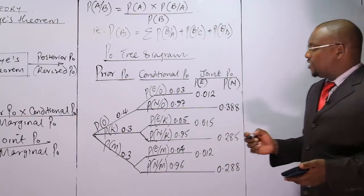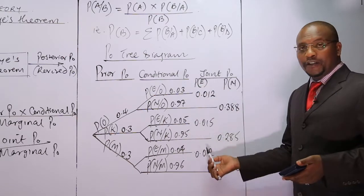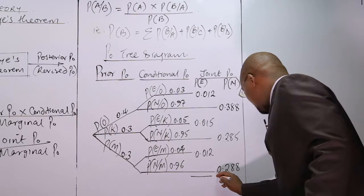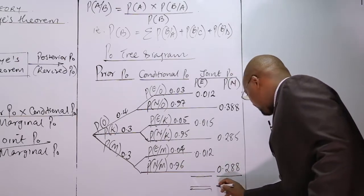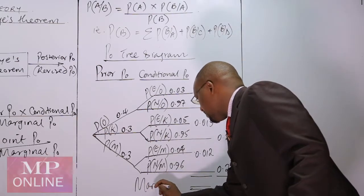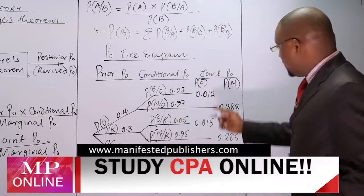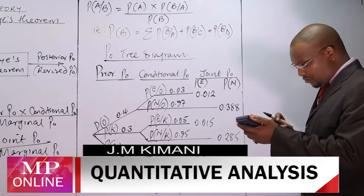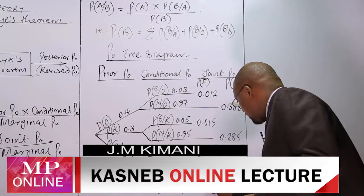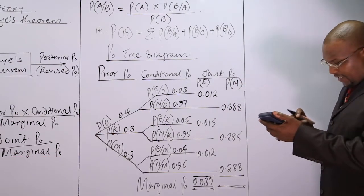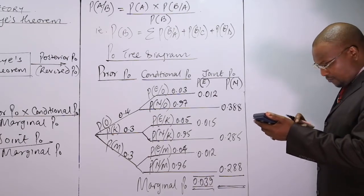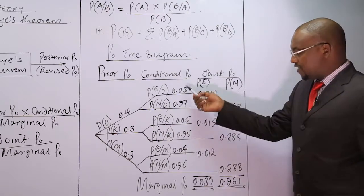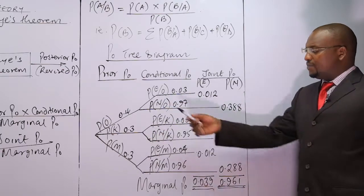Having calculated all joint probabilities, we can now find the marginal probabilities — the total of accounts audited with errors and those with no errors. Adding the error branches: 0.012 + 0.015 + 0.012 = 0.039. Adding the no-error branches: 0.388 + 0.285 + 0.288 = 0.961. Indeed, for every stage the branches should sum to 1, and 0.039 + 0.961 = 1, which confirms our calculation.